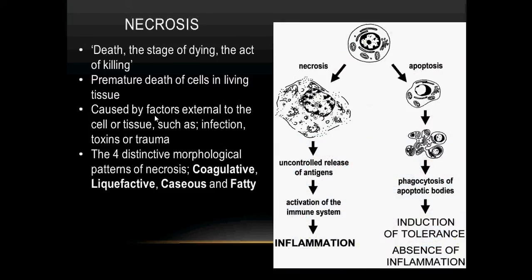Now let's look at necrosis, which is actually the more dirty way of dying. A simple analogy would be that of a smoker — a smoker does not only cause death to himself, but also causes death to the people around him or her. Necrosis is the premature death of cells in living tissue; they die before their time, probably as a result of external factors such as infection, ingestion of toxins, or trauma. The four distinctive morphological patterns of necrosis include coagulative, liquefactive, caseous, and fatty.